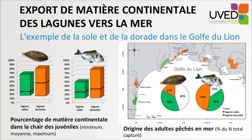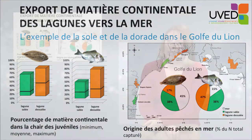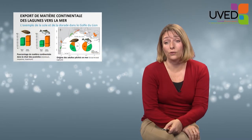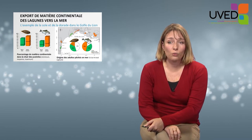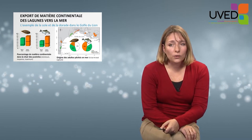Maintenance of the stocks of both species, which are fished in the sea, depends very much on the diversity of habitats found in the lagoons. It is absolutely essential that lagoons are preserved. Lagoons play an essential role for coastal productivity — and it doesn't stop there.